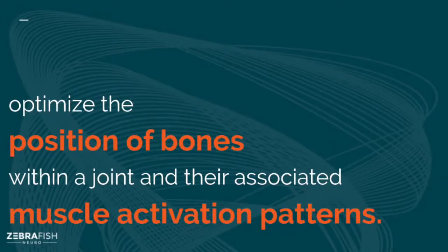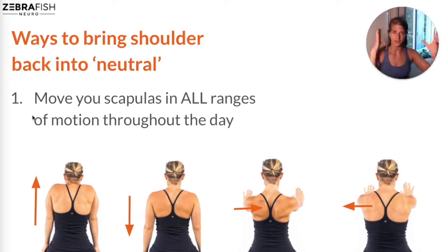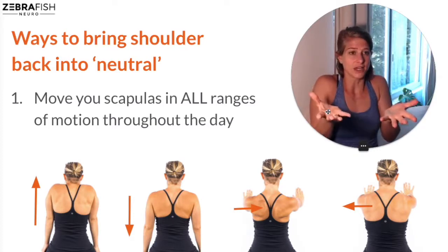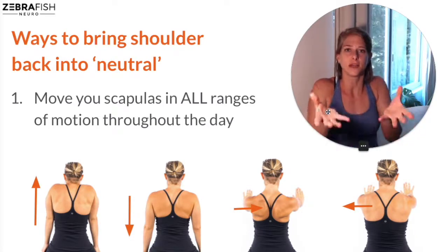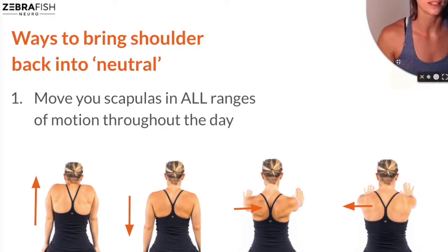To tap into those fascial systems, we need to optimize the position of the bones within the joint and the muscle activation patterns. So how can we work through these disruptions and bring our shoulders back into a more neutral position? First: moving your scapulas in all ranges of motion throughout the day. You want to be moving your body so it doesn't tighten up and stiffen up — the more you expose your shoulders to all those ranges, the better balance you'll have in that three-dimensional float. If this is challenging to do on your own power, you can lay on your back and have someone facilitate that movement for you.